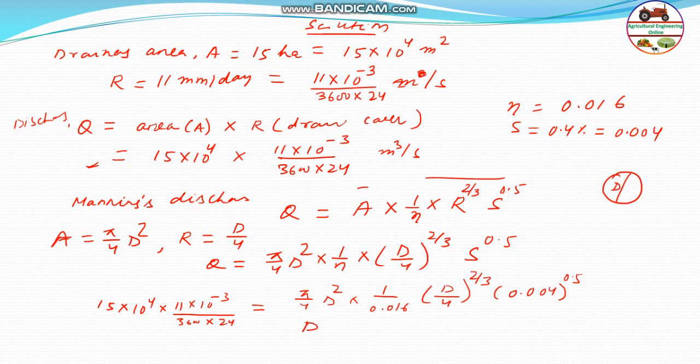d to the power 8 by 3 that will be equal to 0.0155. Therefore d will be equal to 0.0155 to the power 3 by 8. So d will be equal to 0.2096 meter.